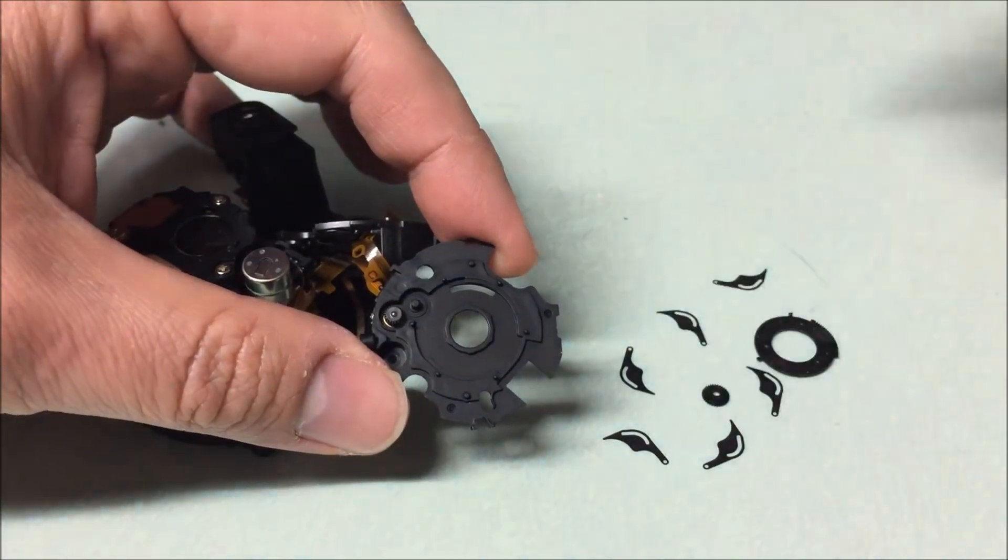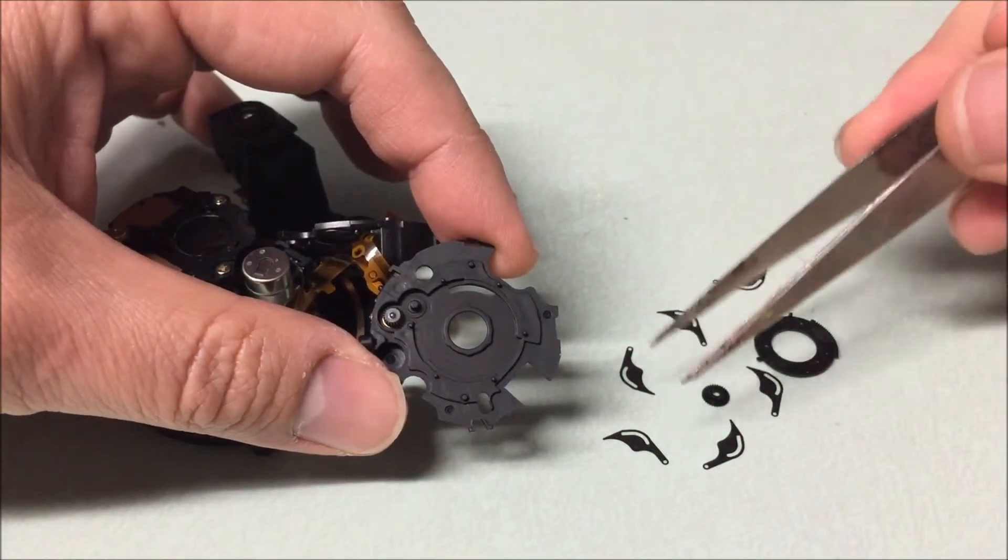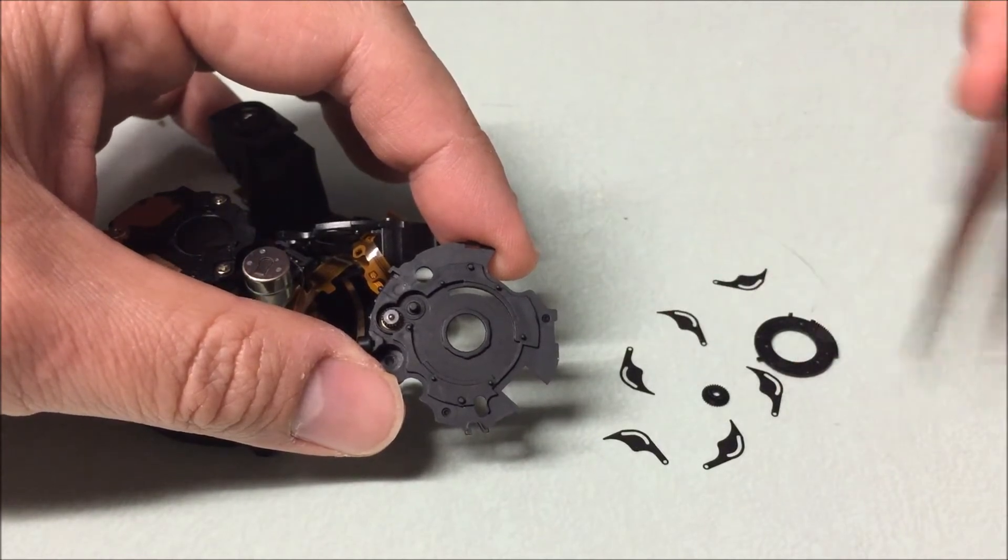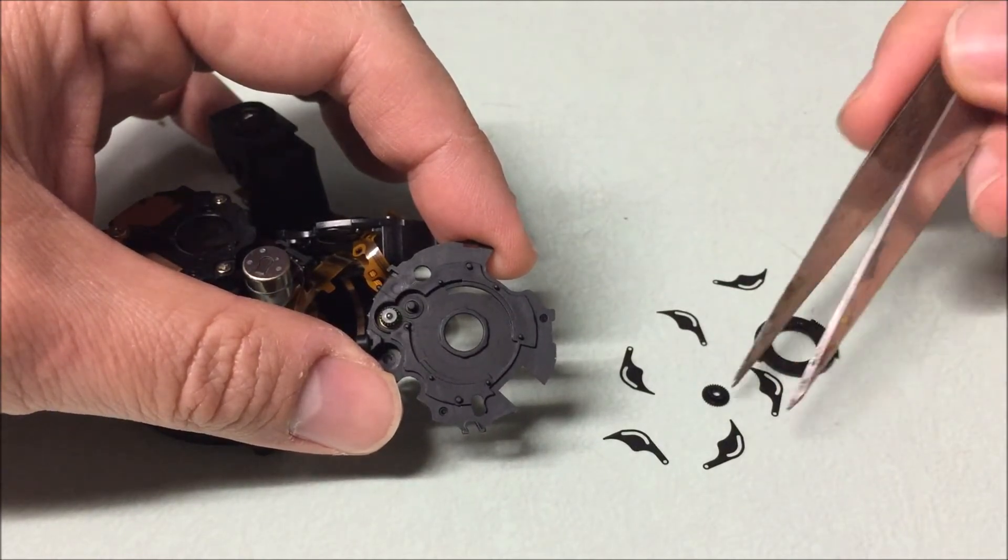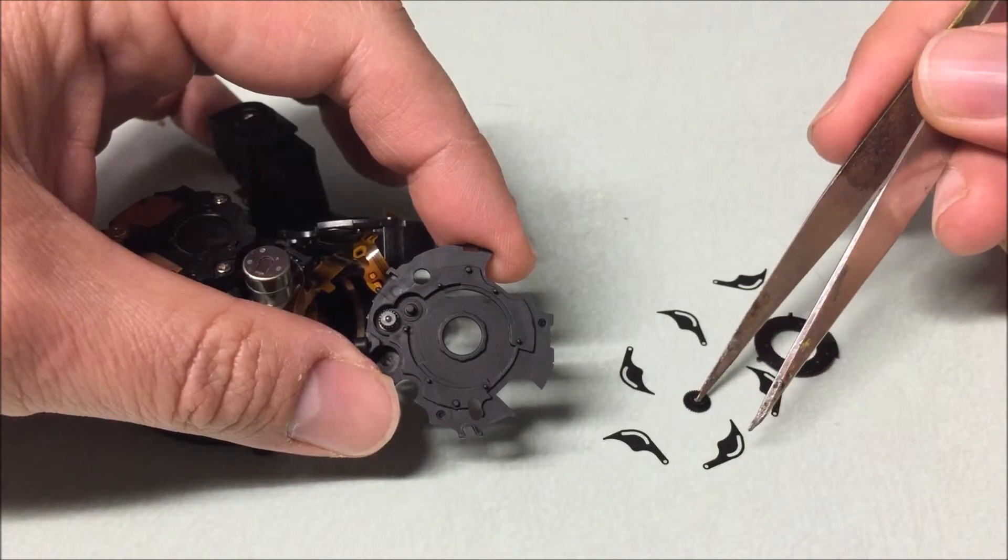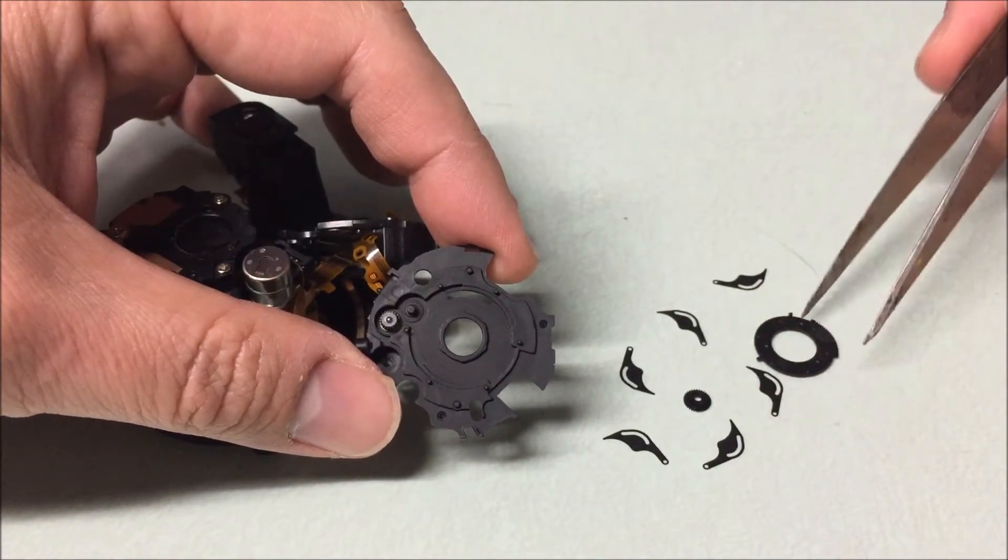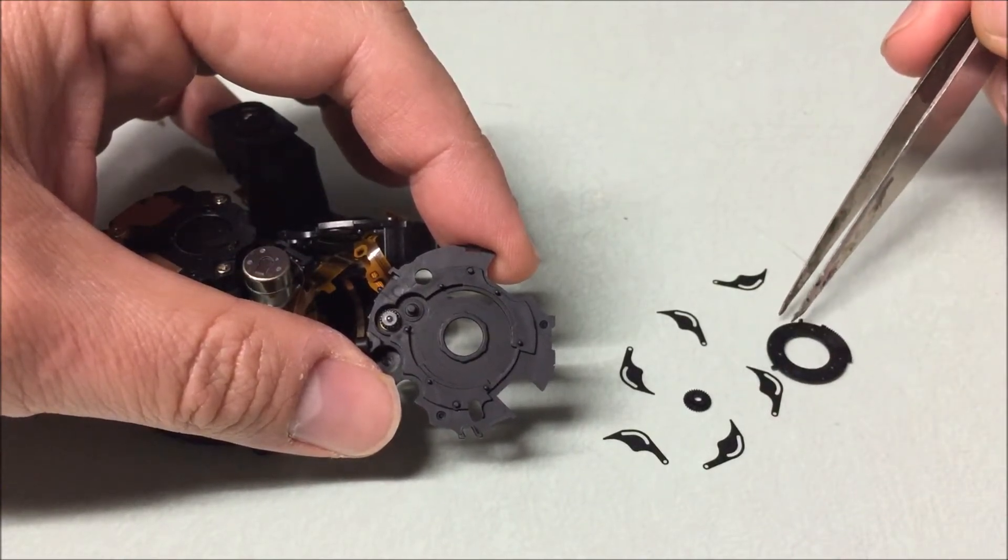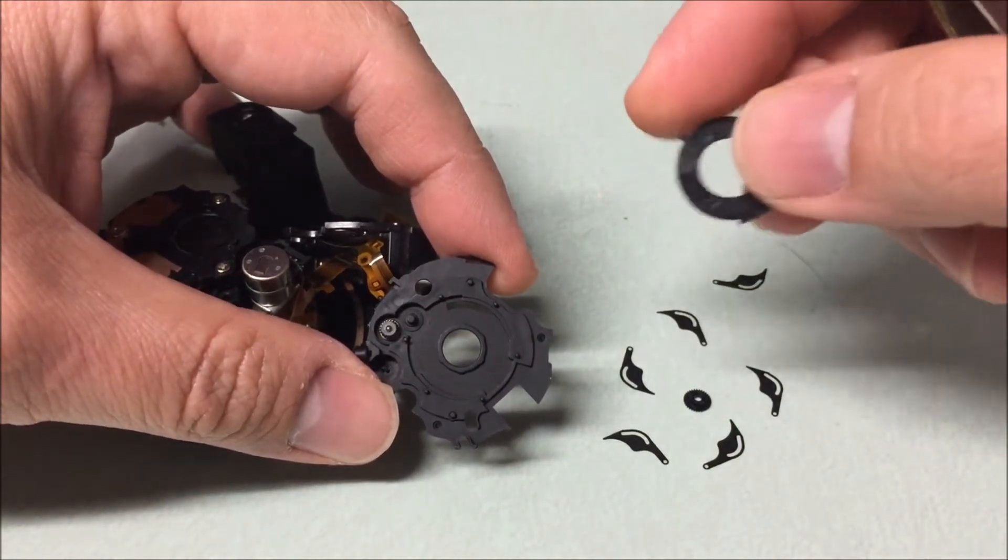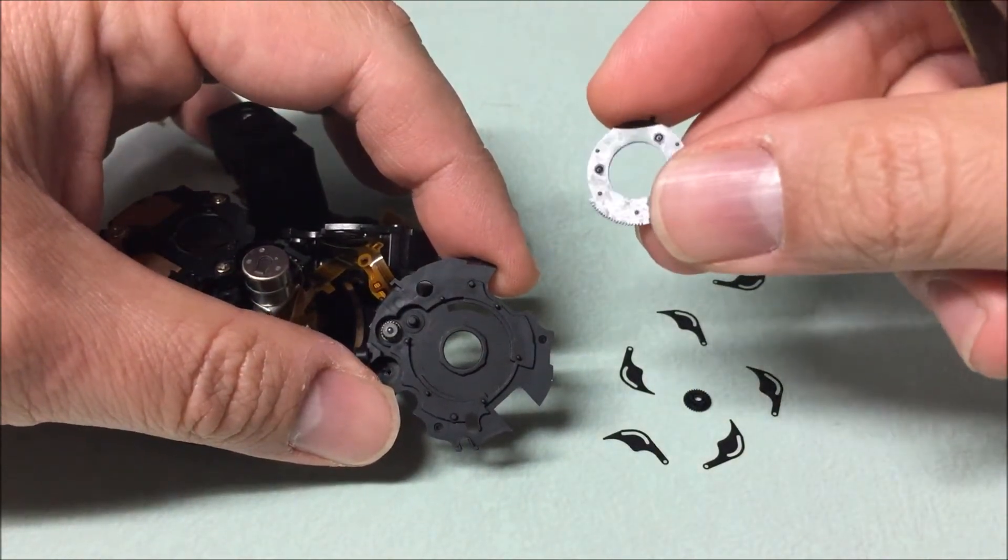You should have six aperture blades, a small gear, and a ring that you'll also see has gears on it.